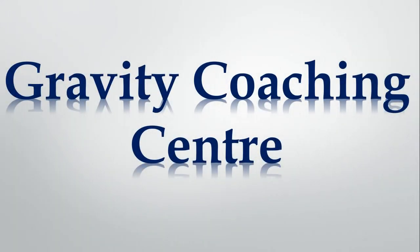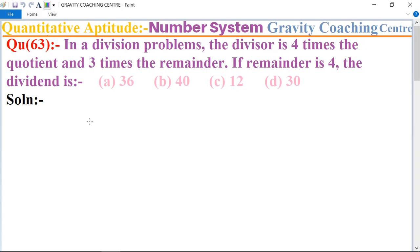Welcome to our channel Gravity Coaching Centre. Quantitative Aptitude, chapter Number System, question number 63. In a division problem, the divisor is four times the quotient and three times the remainder. If the remainder is four, the dividend is which option?